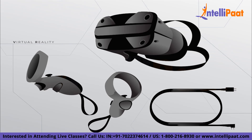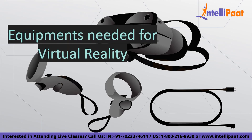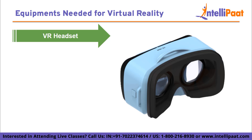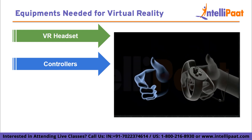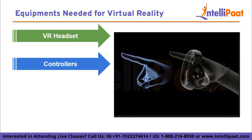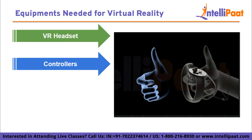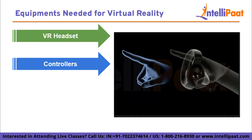To experience virtual reality, you need some specific equipment that enables you to enter and interact with the virtual world. Firstly, we need a VR headset. A VR headset is like a special pair of goggles that you wear over your head. It covers your eyes and displays virtual images in front of them. It often includes built-in motion sensors to track head movement, allowing you to look around and explore the virtual environment. The headset may also have built-in speakers and headphones that provide immersive audio. Next we have controllers. VR controllers are handheld devices that allow you to interact with the virtual world. They typically have buttons, triggers, and sensors to detect your hand movement, allowing you to pick up virtual objects, press buttons, and perform actions in the virtual world.